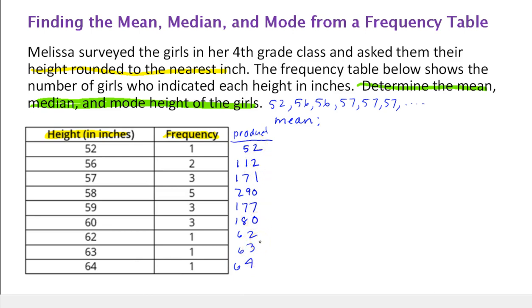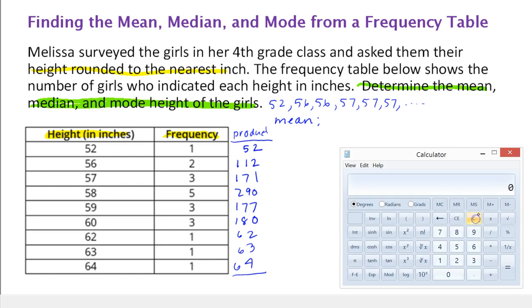These are all of our products, and now if we sum them up, that's the total sum of all the values in the chart. Most importantly, you want to be careful here. You want to write these down and keep all this information organized, because if you lose one, then your answer will be incorrect. So 52 plus 112 plus 171 plus 290 plus 177 plus 180 plus 62 plus 63 plus 64.